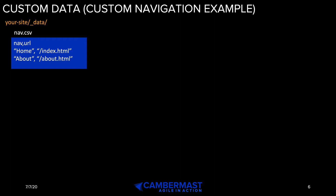The first is a comma-separated values (CSV) file. This is a pretty old-school format that I don't necessarily recommend, primarily because it's hard to read and always prone to error — there are so many files where you just don't get the comma right, or there's a comma inside the text that doesn't get read properly. You can see the first line of the CSV file says nav comma url — these are the column titles. The first nav is called home with url /index.html, and the second nav is about with url /about.html.